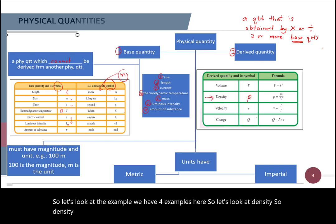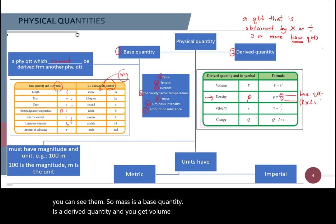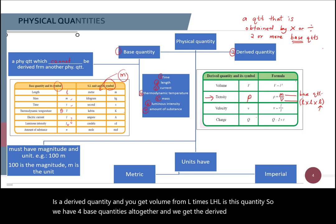So let's look at density. So density, the symbol is rho. And the formula is mass over volume, as you can see there. So mass is a base quantity. Volume is a derived quantity. And you get volume from L times L times L. And each L is base quantity. So we have four base quantities all together. And we get the derived quantity.